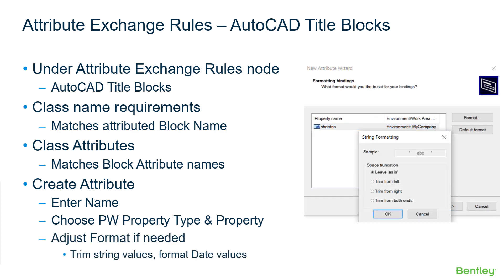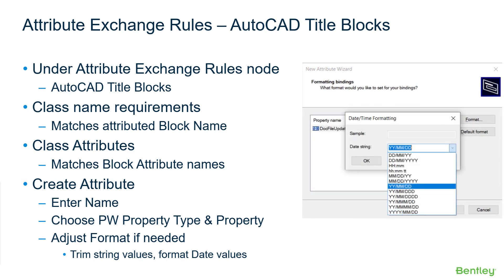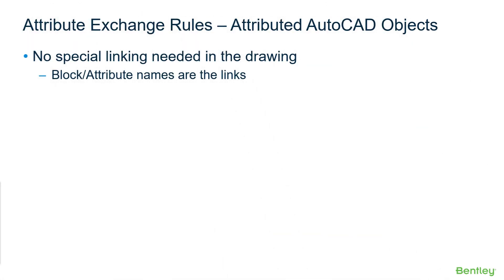The next dialog will allow formatting of the data. For string data formatting, the options are to trim space characters from the data. For date data, the formatting option will be how to display month, day, year. Unlike Attribute Exchange for Microsoft Office applications, the target objects in the AutoCAD drawings have no special link created. The block and attribute names are the links. The drawing is set up using standard AutoCAD data functionality; the Attribute Exchange simply locates and populates data in those standard DWG entities.